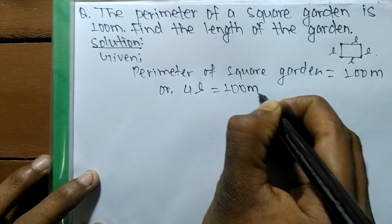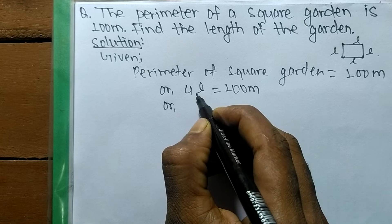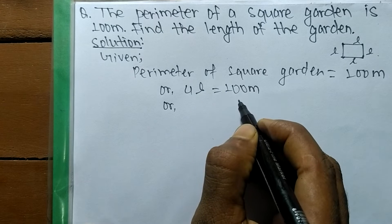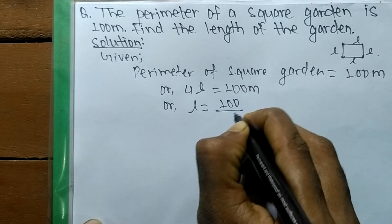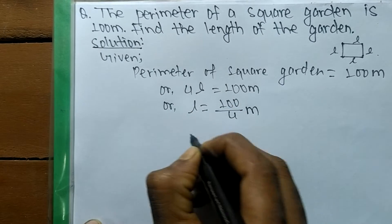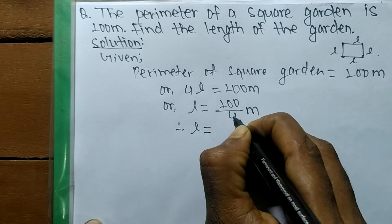So 4L is equal to 100 meters. Now we have 4 is in multiple with L, moves in opposite side becomes divide. So L is equal to 100 by 4 meters.